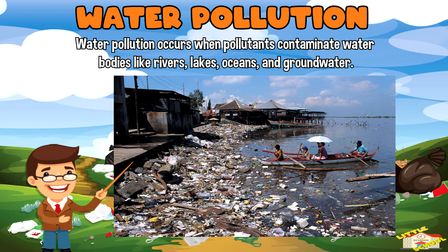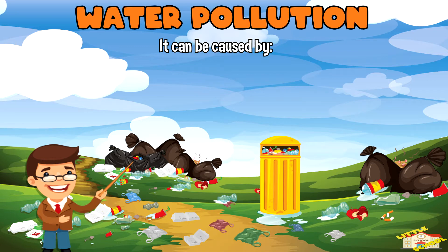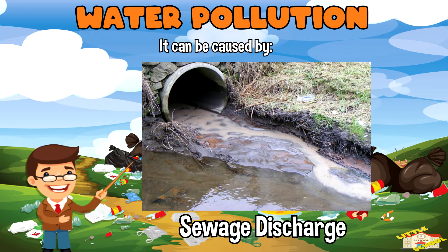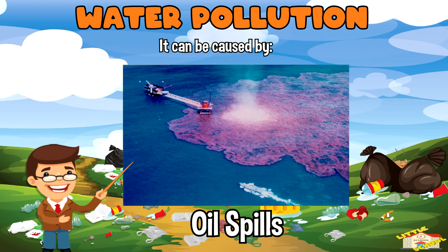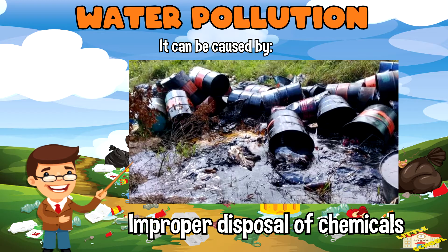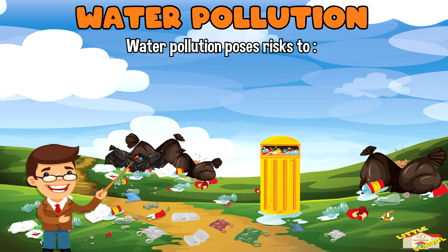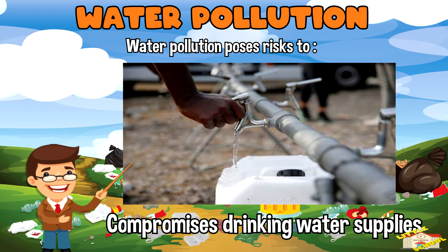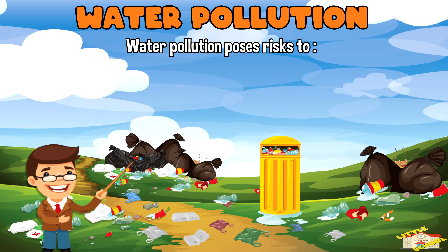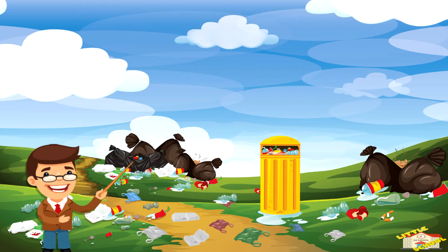lakes, oceans, and groundwater. It can be caused by industrial waste, sewer discharge, agricultural runoff, oil spills, and improper disposal of chemicals. Water pollution poses risks to aquatic life, compromises drinking water supplies, and disrupts ecosystems.